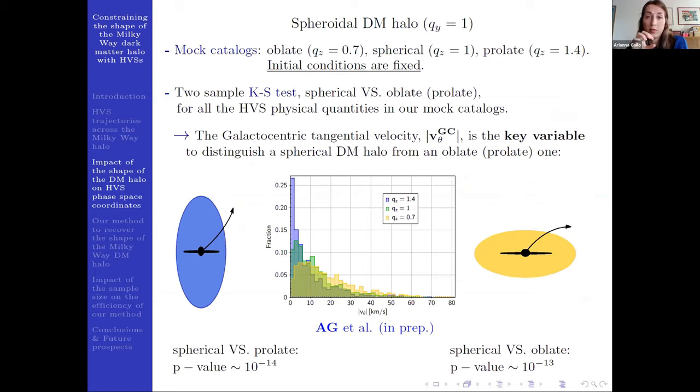We use the mock catalogs generated in the spherical case and in the two more extreme oblate and prolate scenarios we are investigating. And at this stage, we keep the initial conditions fixed since we are interested in the impact of the change only in the dark matter halo shape.